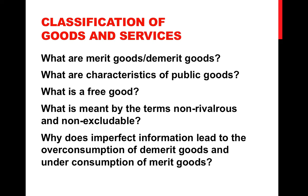Finally, distinguish between merit goods and demerit goods, and understand why imperfect information leads to people over-consuming demerit goods and under-consuming merit goods. Be clear on the characteristics of public goods. Understand what is meant by a free good — it doesn't mean something given away for free; there's a different definition behind that. Be very clear on the terms non-rivalrous and non-excludable and how those apply to goods. Also make sure you understand goods, services, needs, wants, and the different sectors of the economy: primary, secondary, and tertiary. Those you must be very clear on.